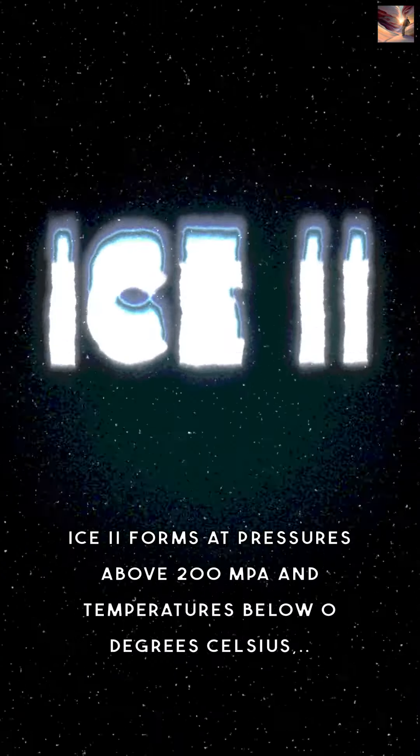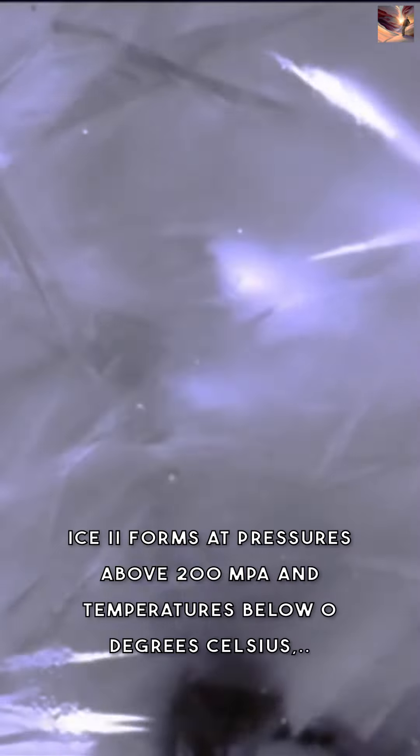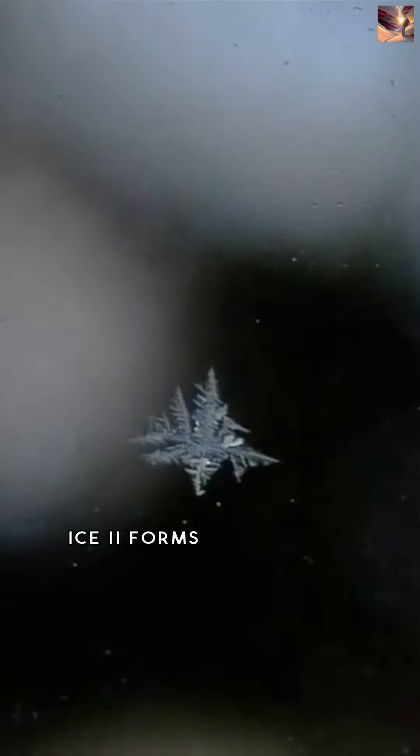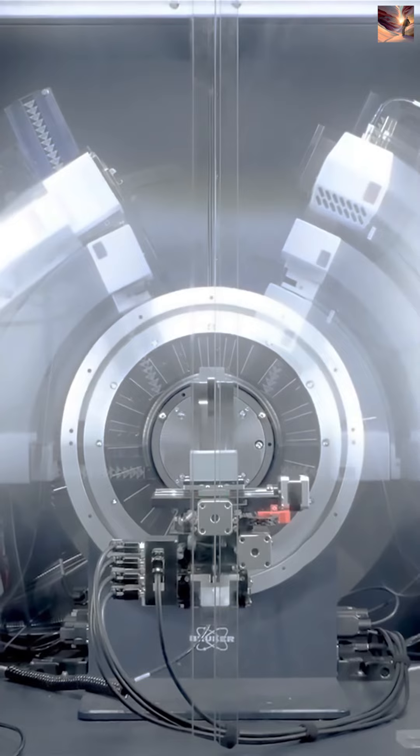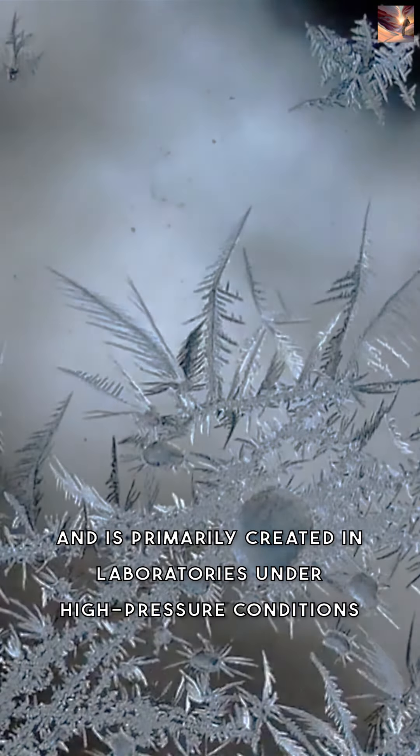Ice 2 forms at pressures above 200 megapascals and temperatures below 0 degrees Celsius. It has a rhombohedral crystal structure, is denser than ice 1, and is primarily created in laboratories under high pressure conditions.